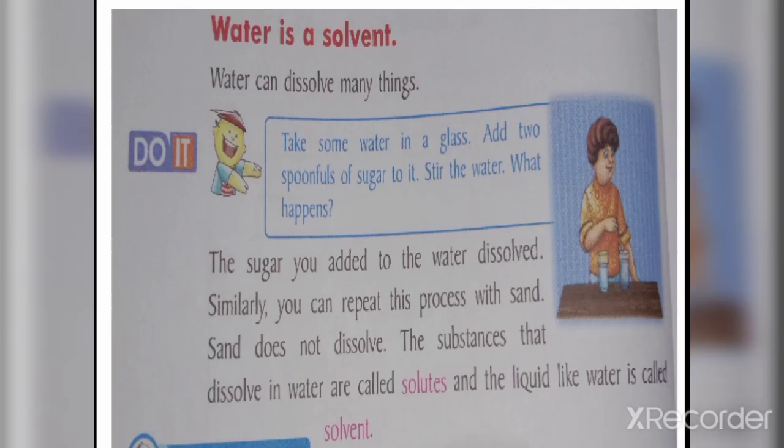Water is a solvent. Take some water in a glass, add sugar, and stir the water. What happens? The sugar you add to the water dissolves.